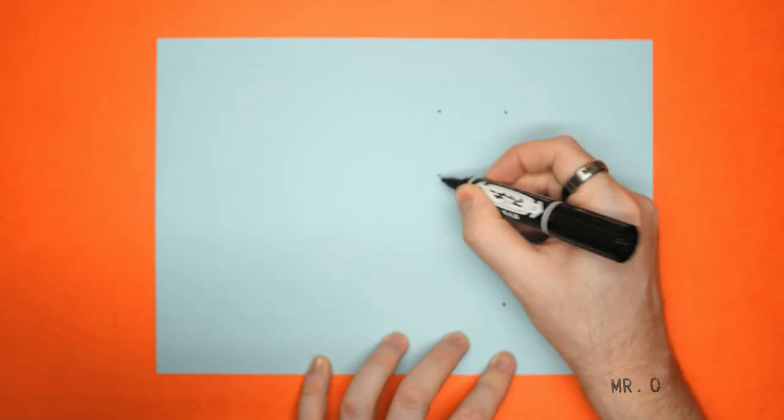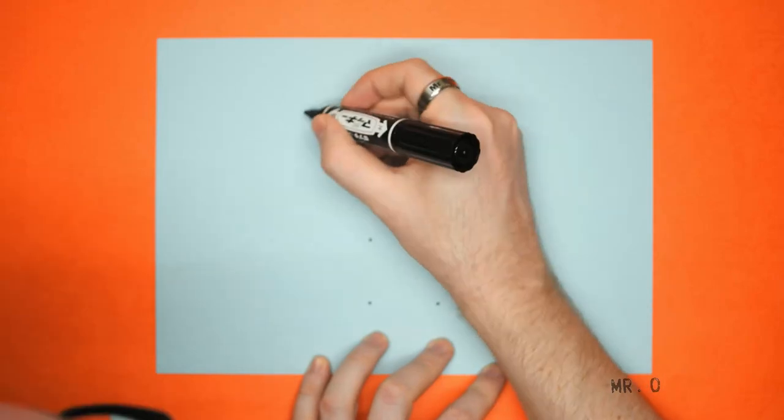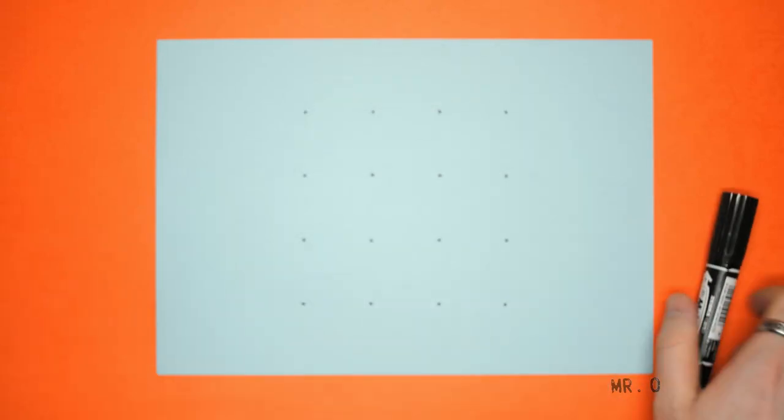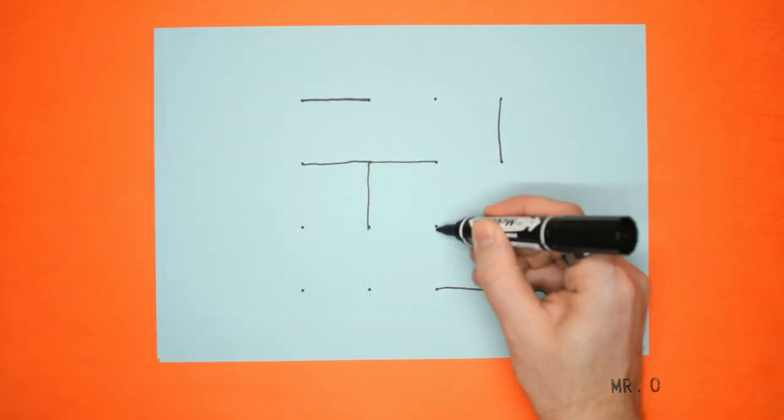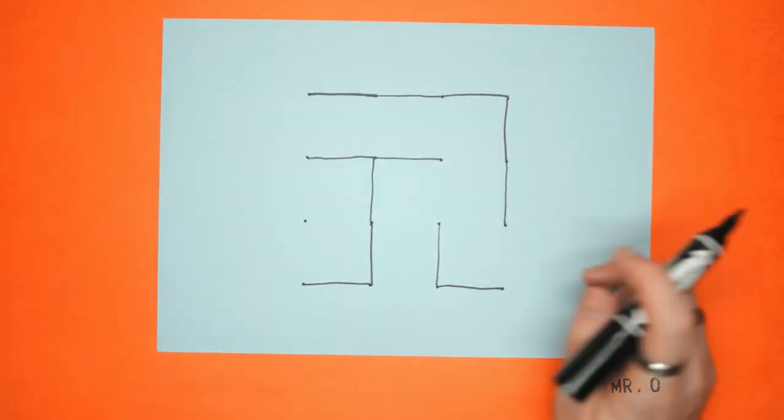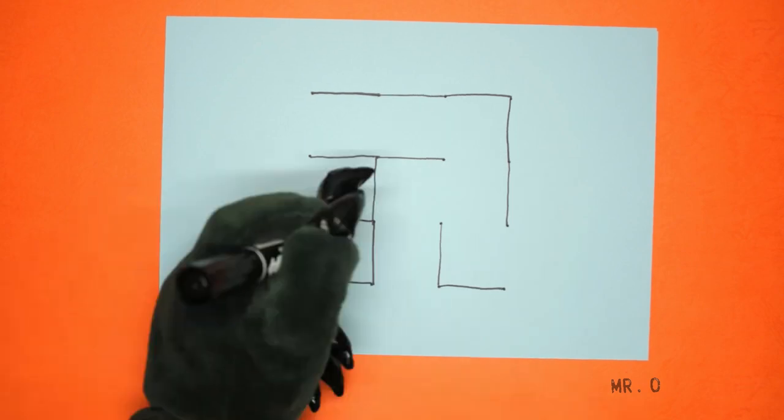Draw dots on the paper in a square or grid pattern, like this. Draw lines up and down or side to side, but no diagonals.